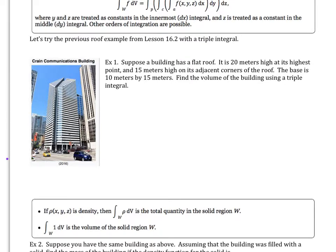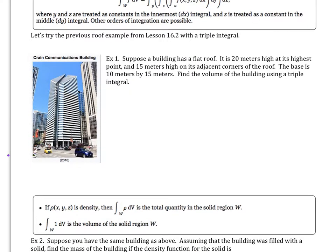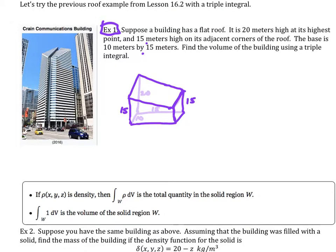This is the same exact example that we had in 16.2 but we want to try to do it now with a triple integral. We have this building that has a flat roof, 20 meters high at its highest point, 15 meters high at adjacent corners of the roof. The base is 10 by 15, so the first thing we should do is draw a picture. Here's the picture and we did find out that the plane on the roof turned out to be 20 minus one-half x minus one-third y.